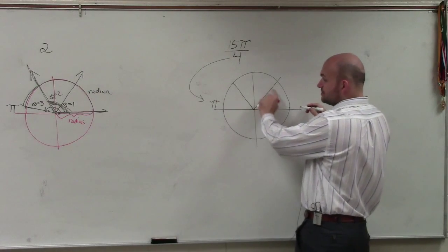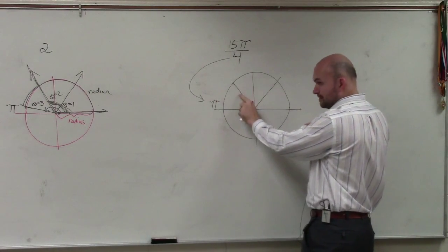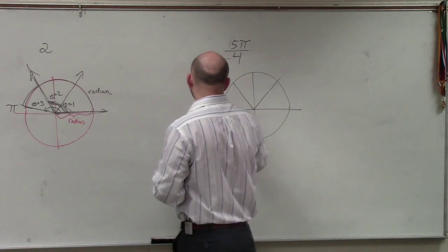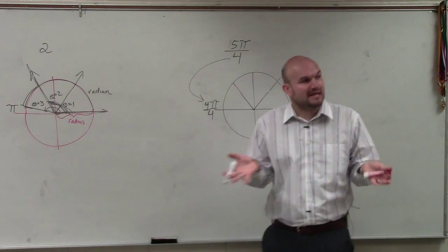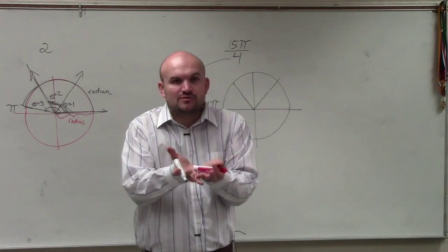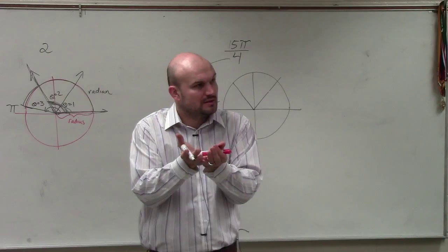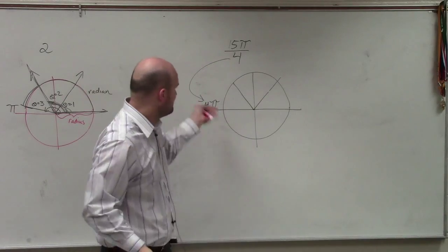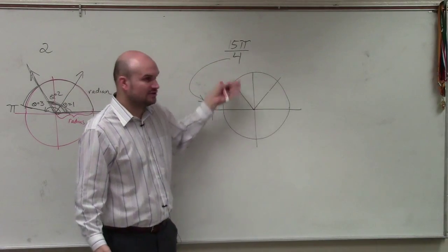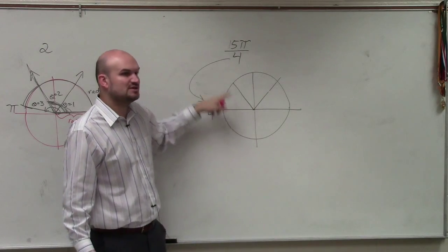then this is pi over 4, 2 pi over 4, 3 pi over 4, and 4 pi over 4. So whatever your denominator is, break your circle into that many sections, because pi is a whole. You have that circle as a whole — it's broken into fours: 1 fourth, 2 fourths, 3 fourths, 4 fourths.